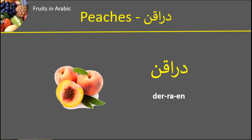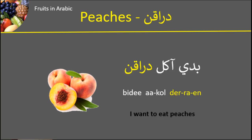درّائن. Peaches. درّائن. Here is an example of peaches used in a sentence: بدي آكل درّائن — I want to eat peaches. بدي آكل درّائن.